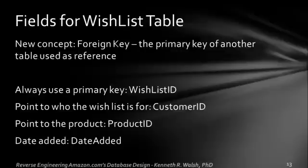Here are our fields for the wish list table. We start with a wish list ID as the primary key. We point to who the wish list is for using customer ID — a foreign key that references the customer table. If we need the customer's name and address, we look up that customer ID in the customer table. Product ID references the product being wished for, and then date added. When we reference the primary key of another table, we call that a foreign key. So wish list ID is the primary key, and customer ID and product ID are foreign keys in the wish list table.